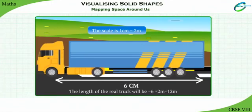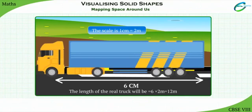This means that if one draws a map, he or she has to decide that 1 cm of space on that map shows a certain fixed distance of, say, 1 meter or 10 meters in reality. Thus, scales can vary from map to map, but not within a map.